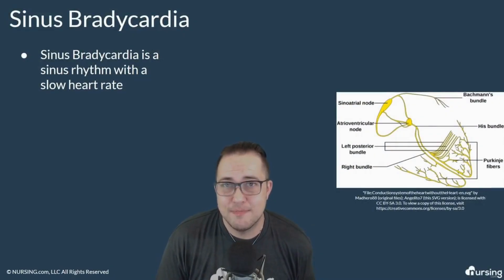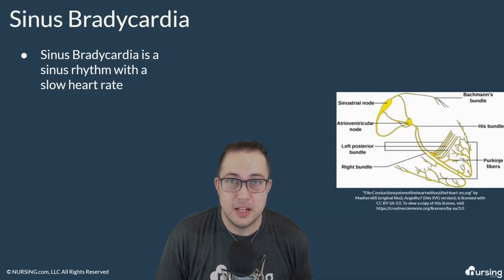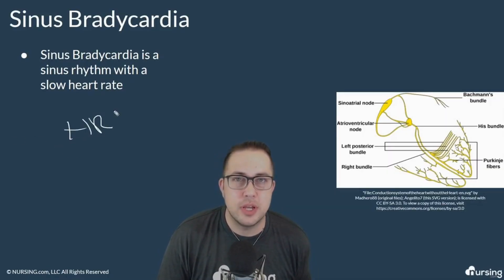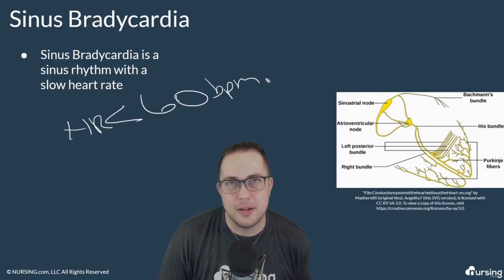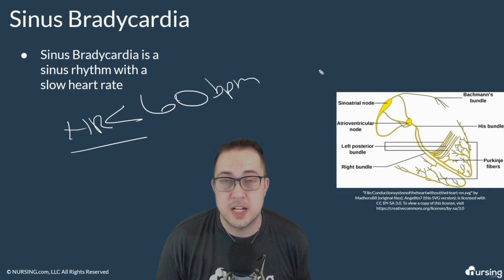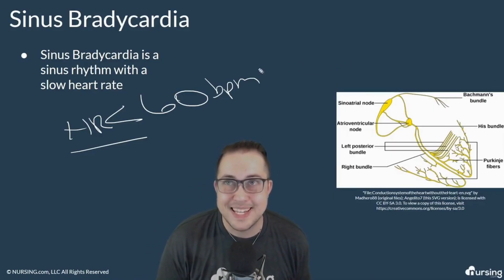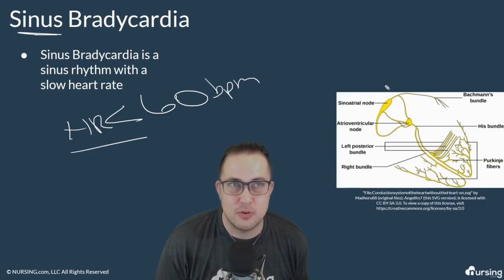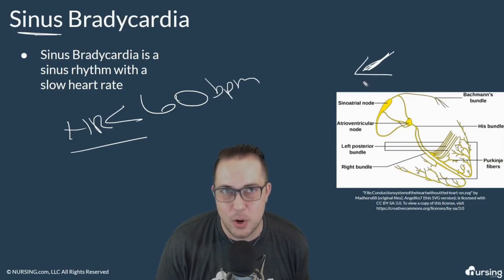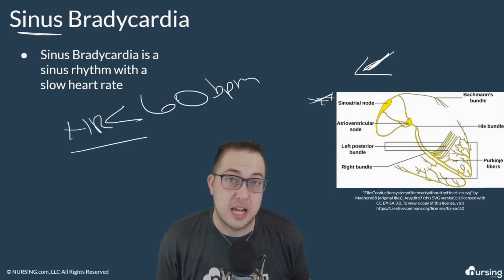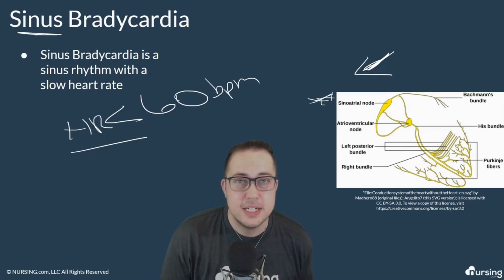Sinus bradycardia is simply normal sinus rhythm but with a slower heart rate — typically less than 60 beats per minute. Just like normal sinus rhythm, sinus bradycardia is a sinus rhythm because the electrical impulse begins in the SA node, the sinoatrial node. The main differentiator between normal sinus rhythm and sinus bradycardia is that slower heart rate.